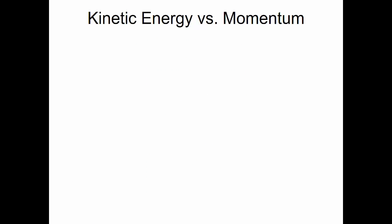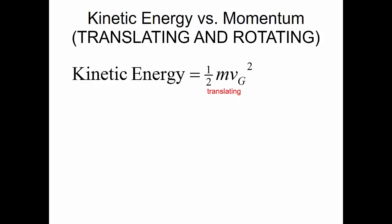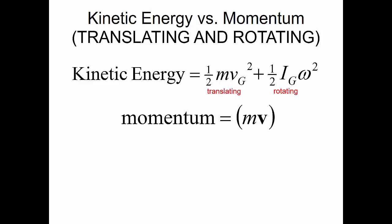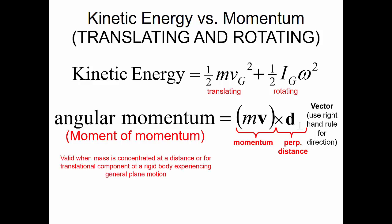Let's look at kinetic energy versus momentum to distinguish between the two, for both translating and rotating objects. Kinetic energy equals one-half mass times velocity squared for the translating portion, plus one-half mass moment of inertia times angular velocity squared. For momentum, a translating object is represented by mass times velocity vector. Angular momentum is the mass times velocity vector crossed with a perpendicular distance — a vector determined using the right-hand rule. This is valid when mass is concentrated at a distance, or for the translational component of a rigid body experiencing general plane motion.